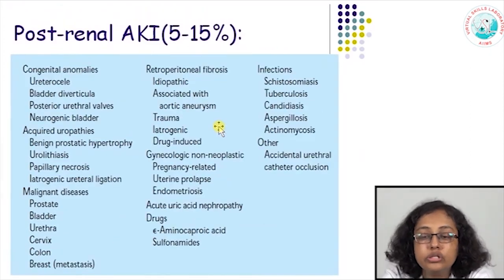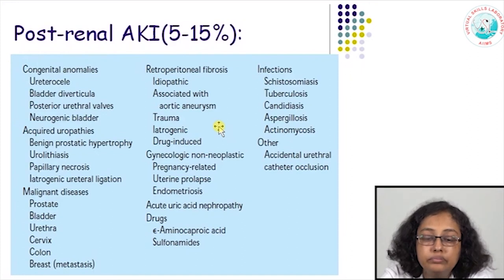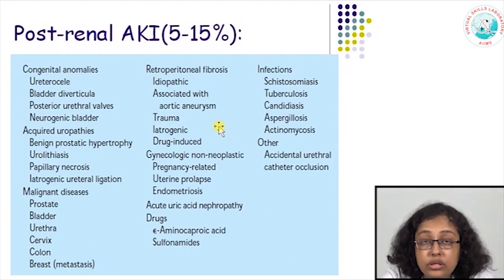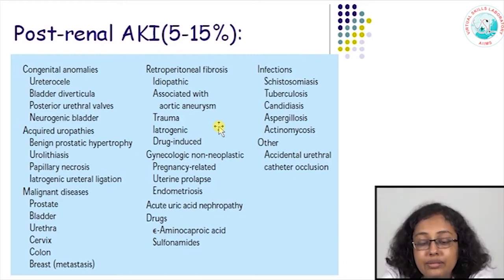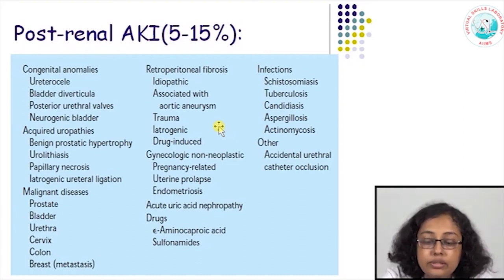Post-renal acute renal failure is less common, seen in 5 to 15 percent of cases. Urine is produced but cannot be passed due to a blockage in the outflow path. Causes vary according to age: in children it could be a posterior urethral valve or neurogenic bladder; in the elderly it could be prostatic enlargement; in diabetics it could be papillary necrosis. Malignancies can cause bilateral ureteric involvement due to metastasis — prostatic cancer, cervical cancer in females, or colonic malignancies. Other causes include retroperitoneal fibrosis, traumatic post-renal injury, acute uric acid nephropathy, and some rare infections.